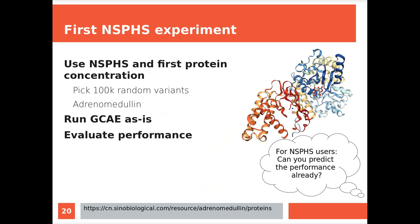Next experiment was to use the Northern Swedish population health study, real data, with one protein concentration, and to see how it worked. So we picked 100,000 random SNPs - this is whole genome sequence data, so one in 3,000 SNPs I guess. And we used the protein concentration of adrenomedulin, which is also here in 3D. And from those random variants, we tried to predict the concentration of adrenomedulin. We just ran GCAE as is and then evaluated the performance.